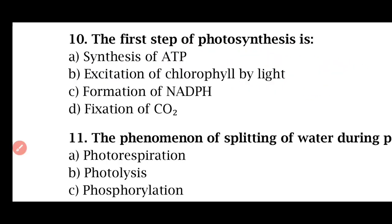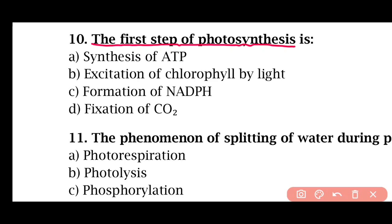Question 10: The first step of photosynthesis is — synthesis of ATP, excitation of chlorophyll by light, formation of NADPH, or fixation of carbon dioxide. The correct answer is option B. The first step of photosynthesis is the excitation of chlorophyll by light photons.